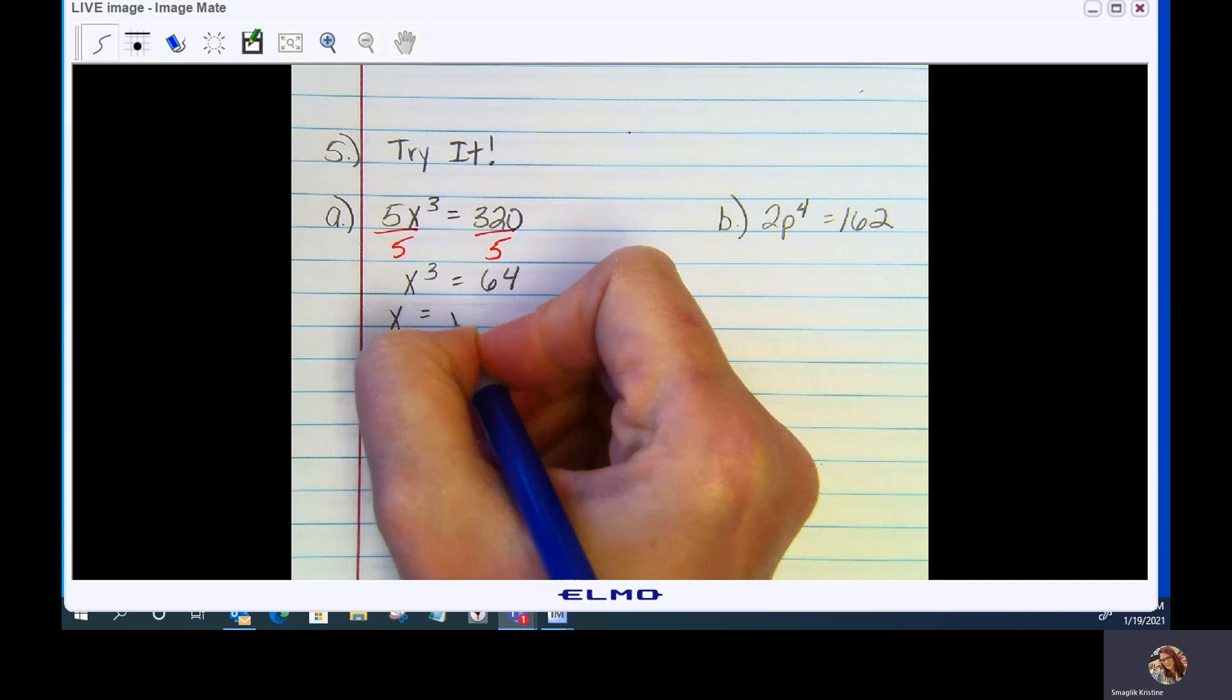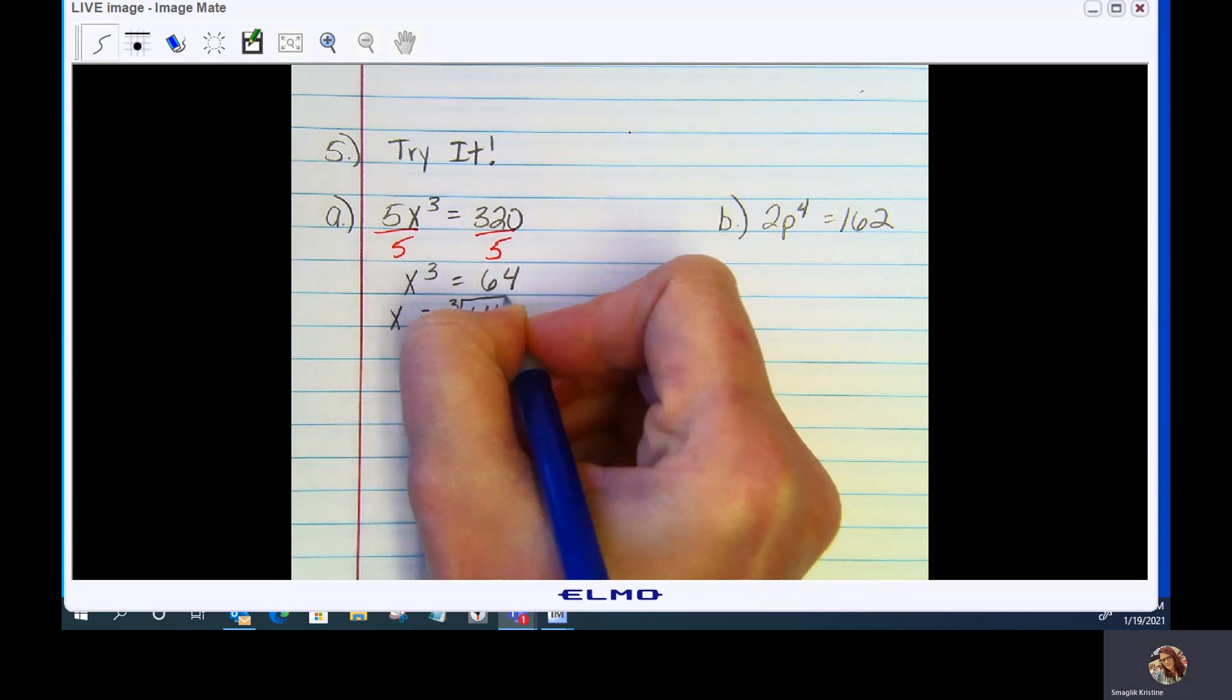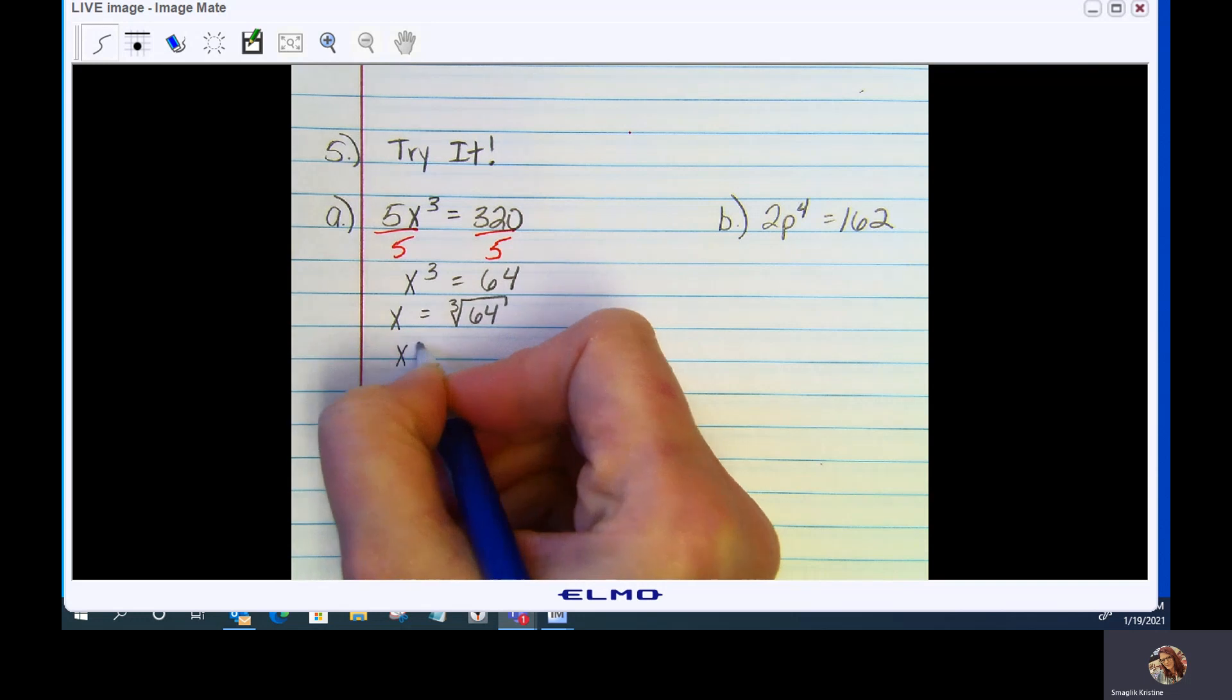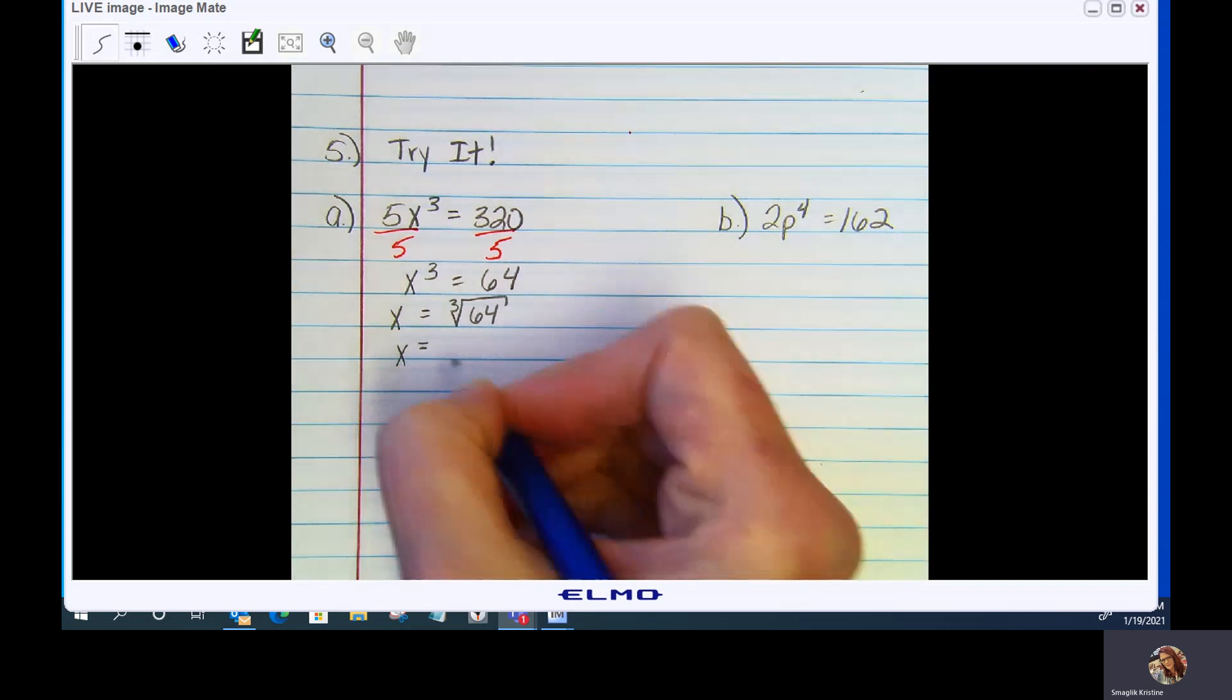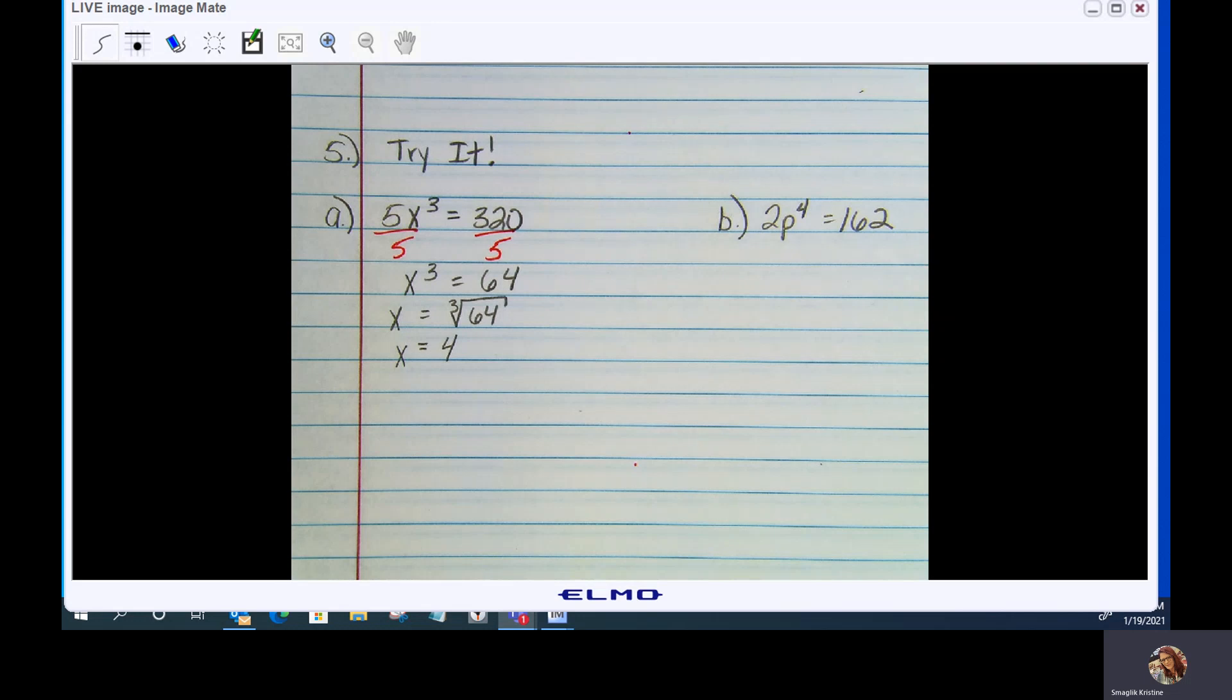x equals the cube root of 64. And the cube root of 64 is 4. 64 is 4 to the 3rd power.